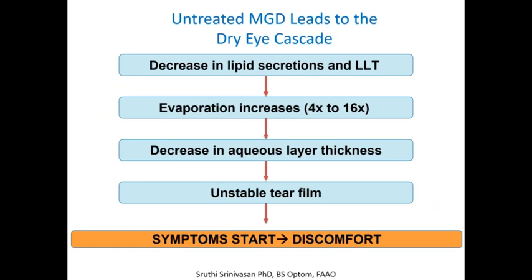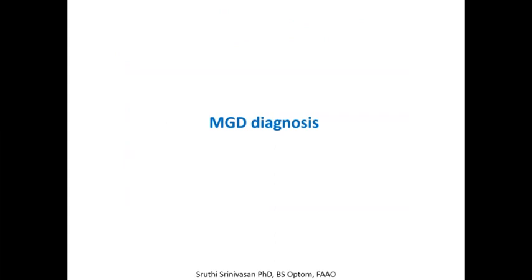Even in contact lens wearers who complain of discomfort, it could be because of blockage of meibomian glands. When meibomian gland disease is untreated, it can lead to serious discomfort. When the glands get obstructed, there is a decrease in lipid secretion and the lipid layer thickness decreases significantly, increasing evaporation of the aqueous layer from four times up to 16 times. This decreases lipid layer thickness, leading to an unstable tear film, and results in symptoms of discomfort and dryness — the typical dry eye cascade from untreated meibomian gland dysfunction.